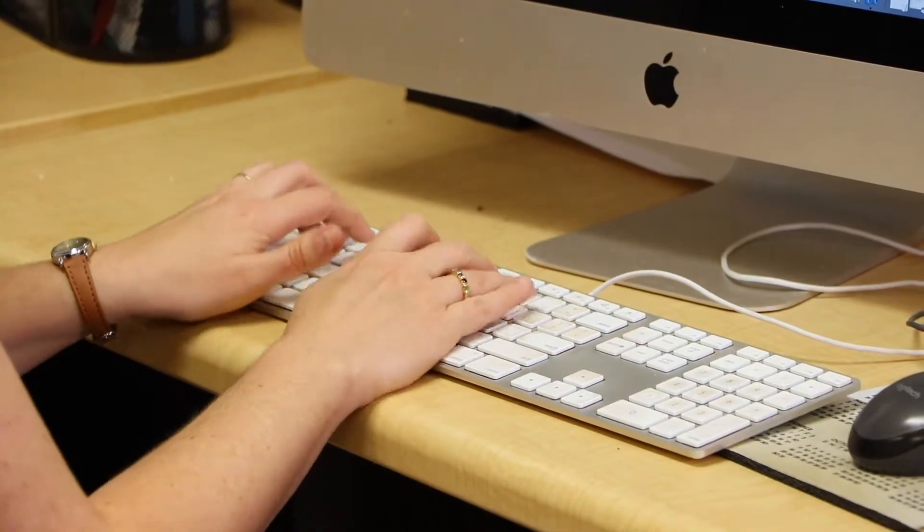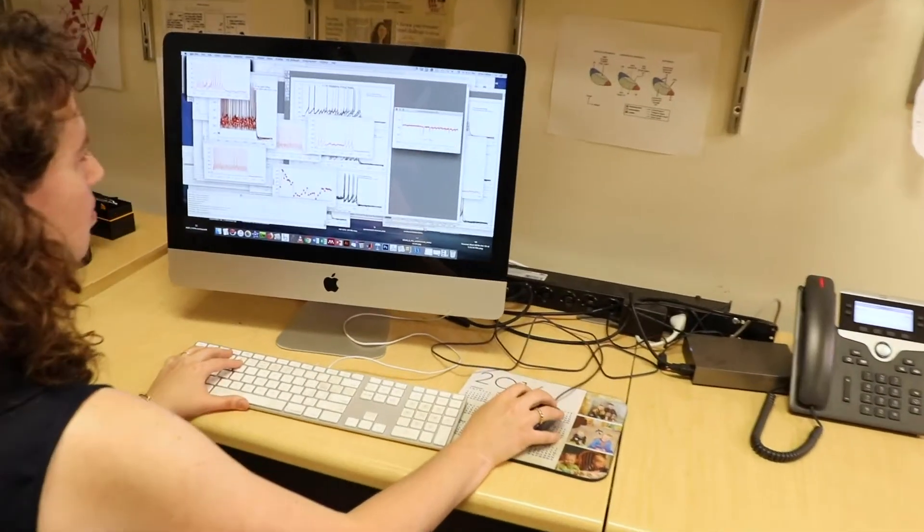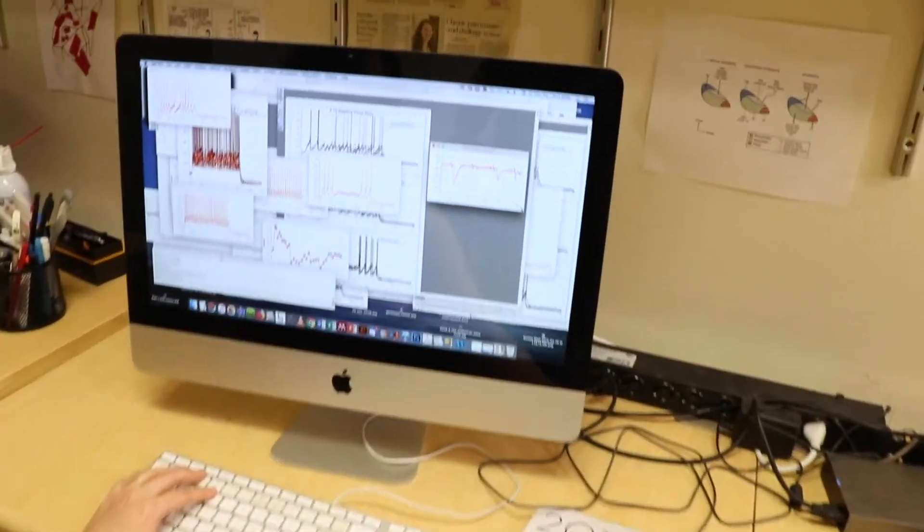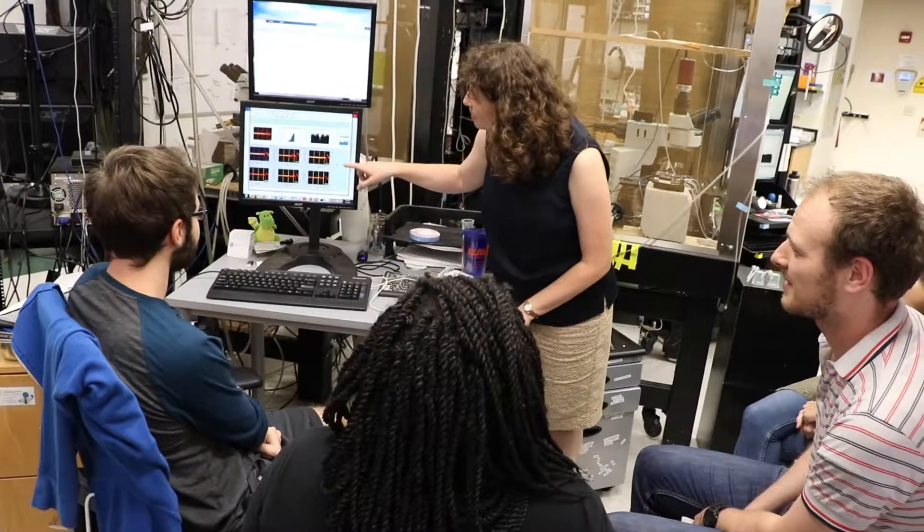Dysfunction of the basal ganglia often results in disorders associated with motor control, so Parkinson's disease is one of the primary examples. My lab is interested in the motor symptoms of Parkinson's disease, and they arise due to dysfunction of circuits in the basal ganglia.